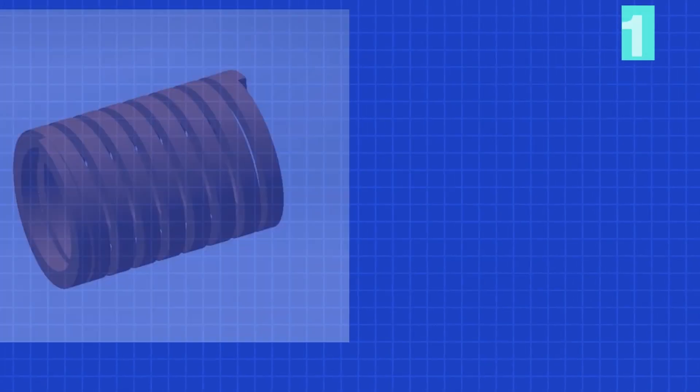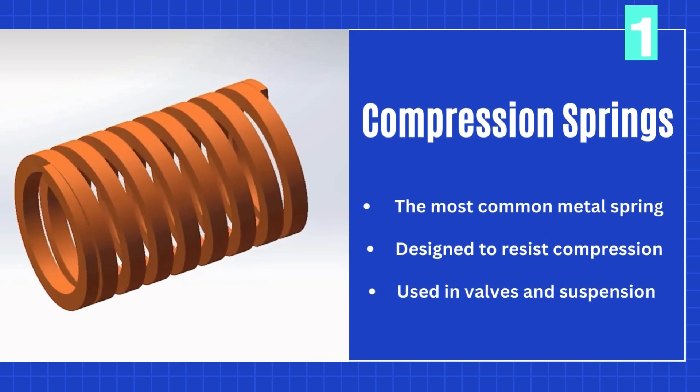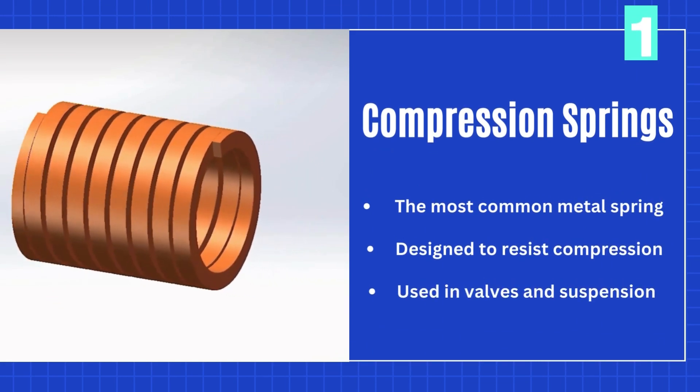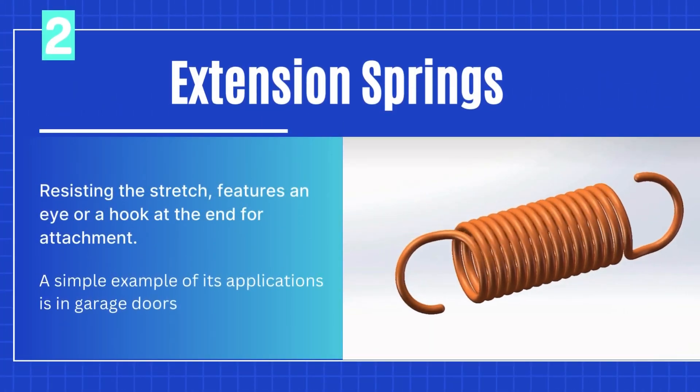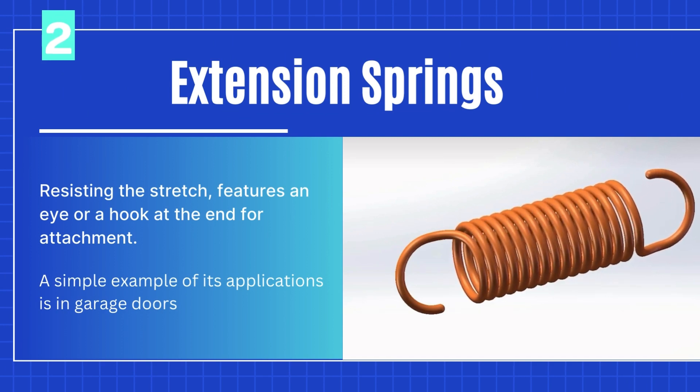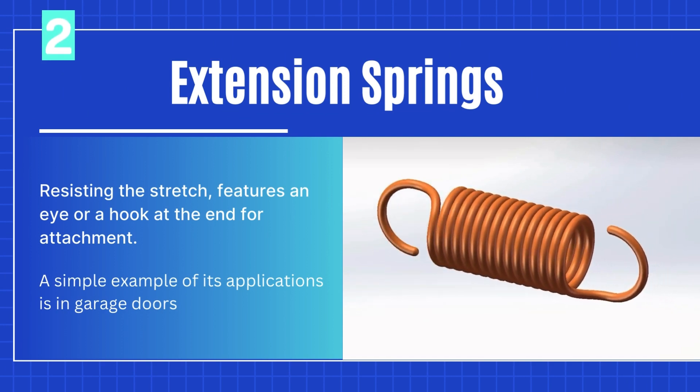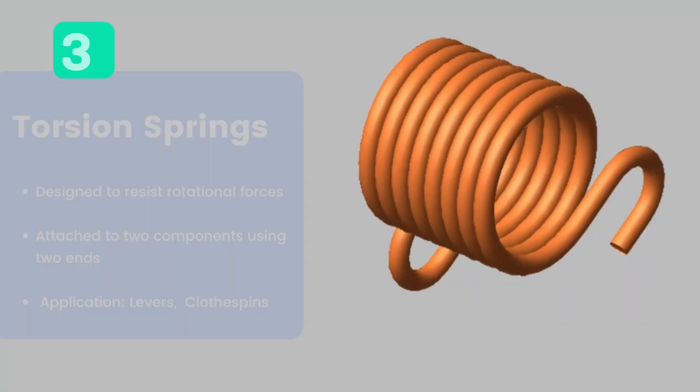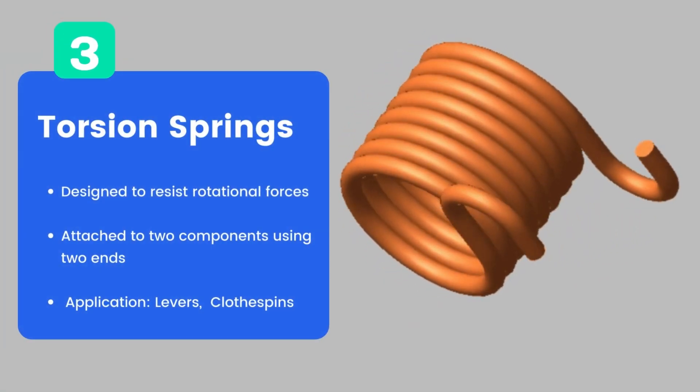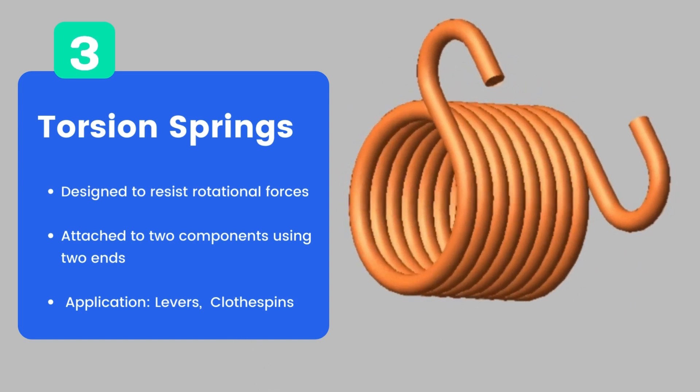Open coiled helical springs, or compression springs, are designed to resist compression. These springs are not wound tightly and have a high pitch. Suppose one wants to extend a spring—it is a closed coiled helical spring or extension springs, which features an eye or a hook at the end for attachment.